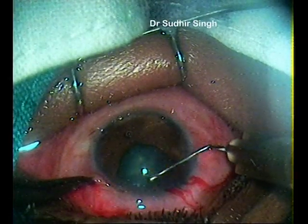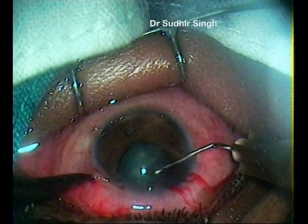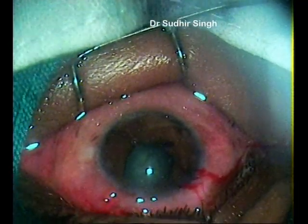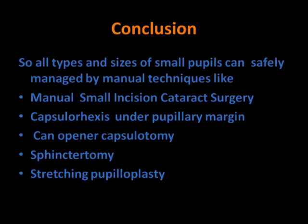This case is completed successfully by clear corneal phacoemulsification with foldable IOL. In conclusion, all types and sizes of small pupils can be safely managed by manual techniques such as manual small incision cataract surgery, capsulorhexis under pupillary margin, can opener capsulotomy, sphincterotomy, stretching, and pupilloplasty.